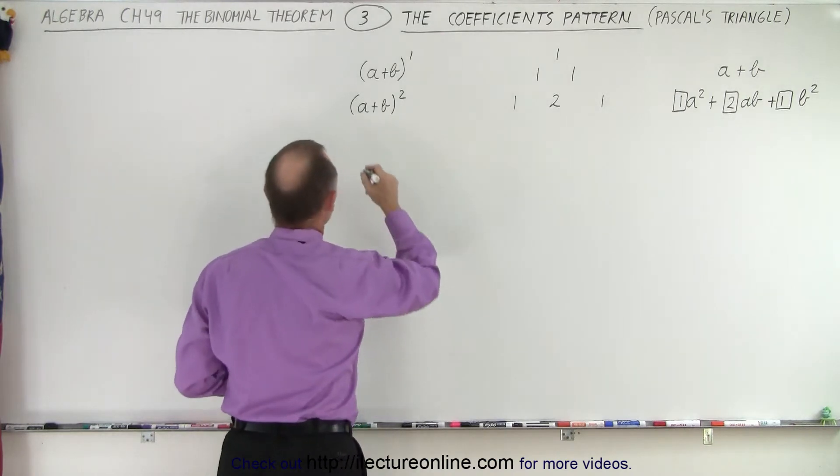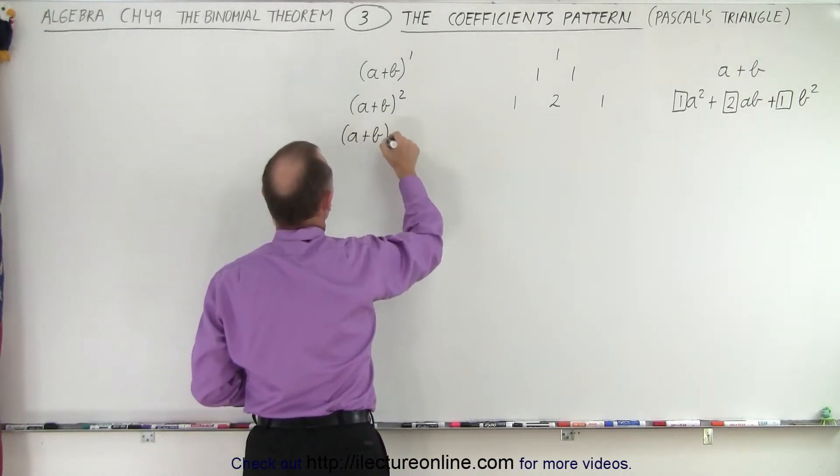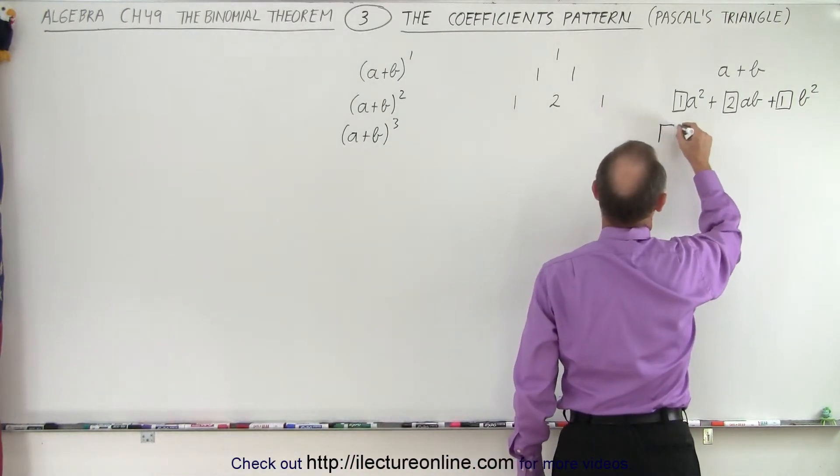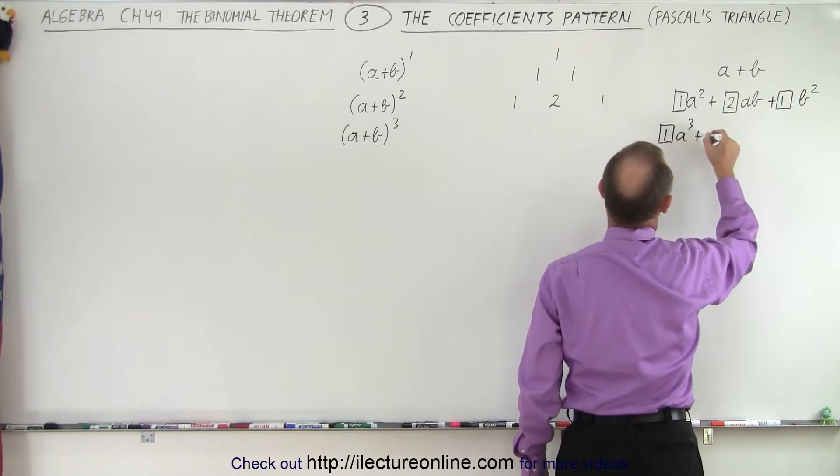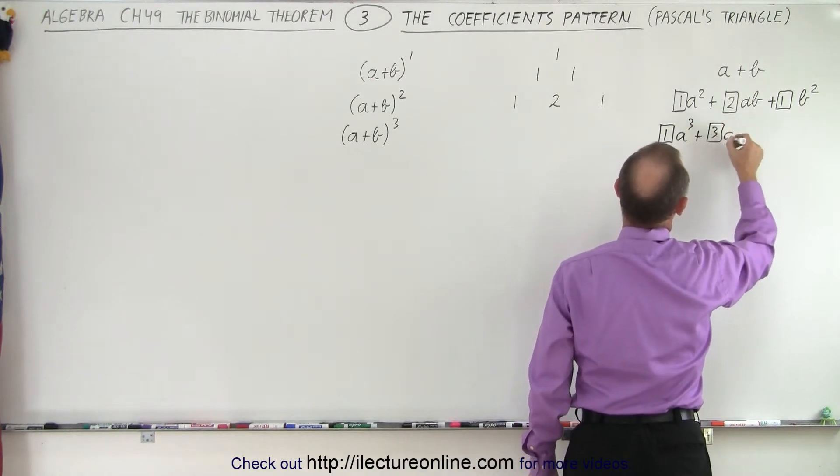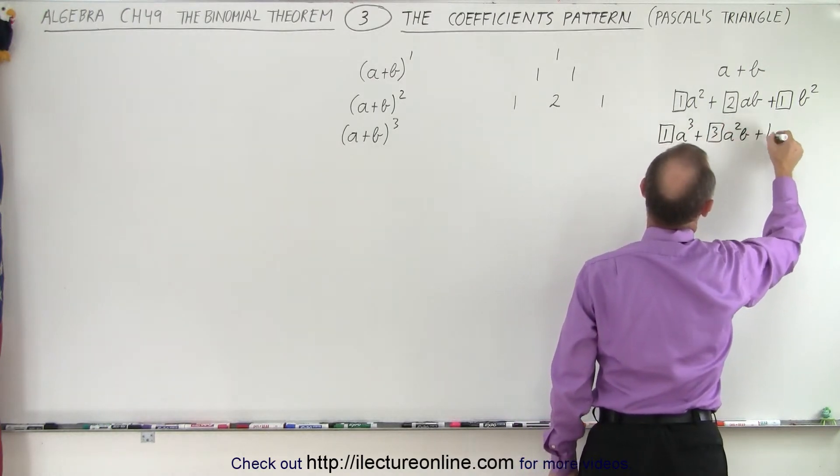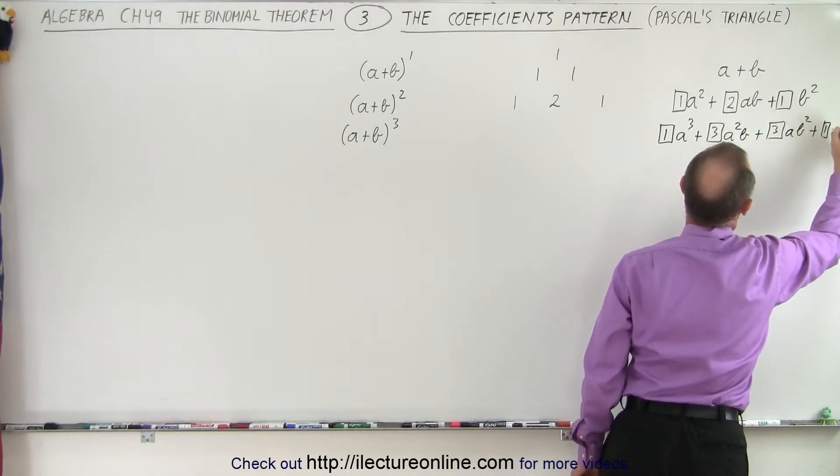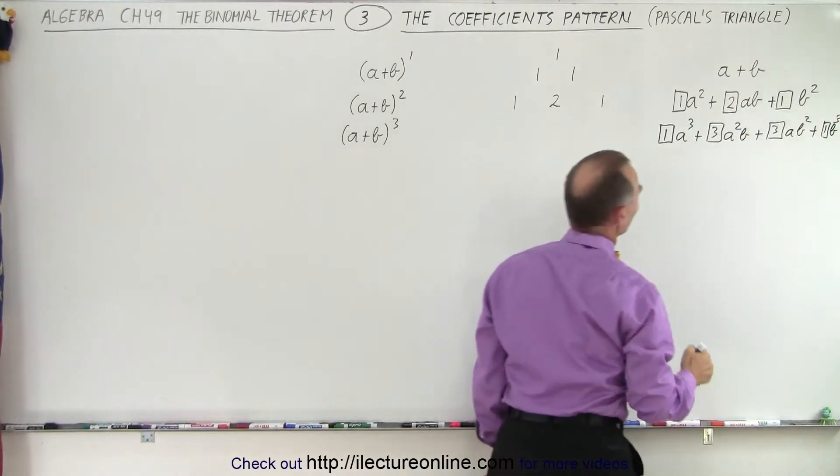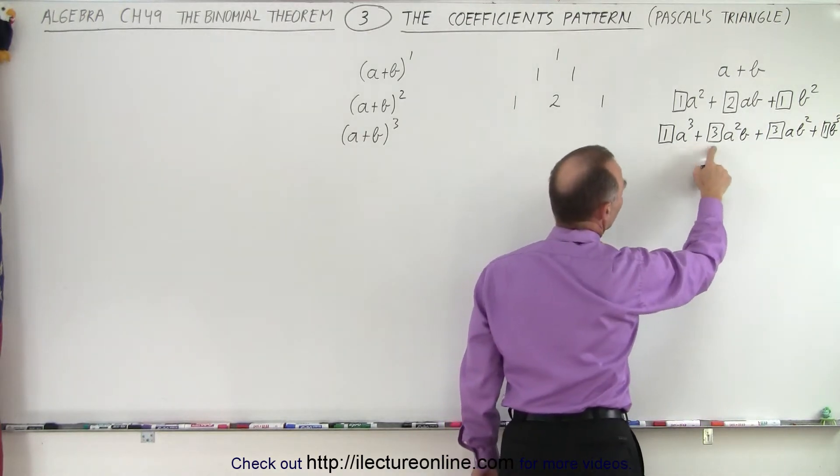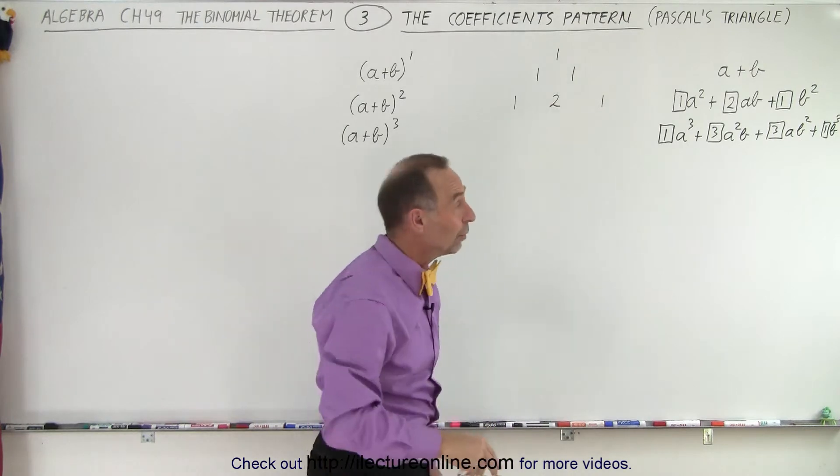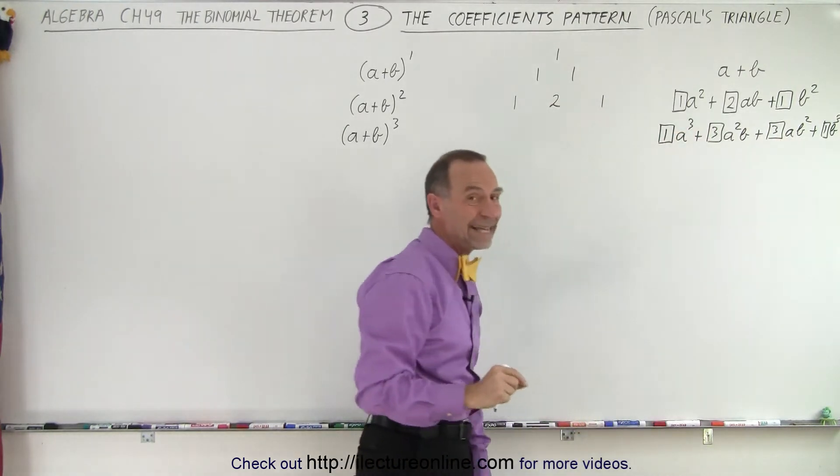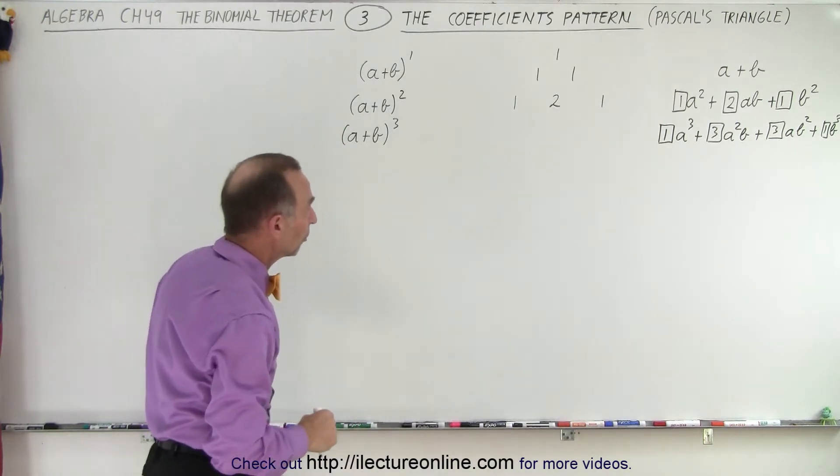Let's go for a plus b cubed. Now we already know that that will be equal to 1a cubed plus 3a squared b plus 3ab squared plus 1b cubed. So notice the coefficients become 1, 3, 3, and 1. On the previous video, we already took care of how we determined the exponents in our expansion. So again, what we do is we take the two ones, we move them out.